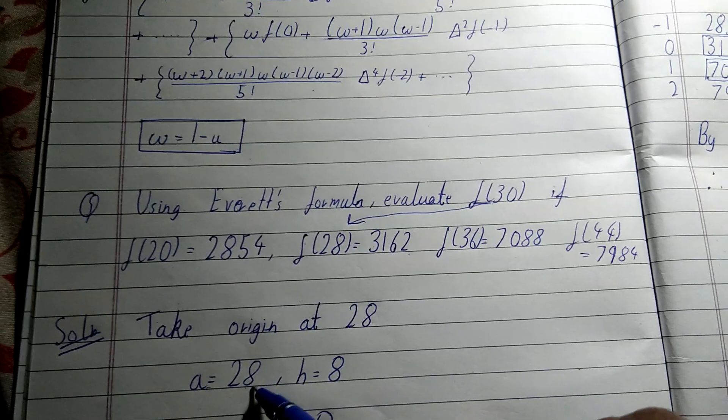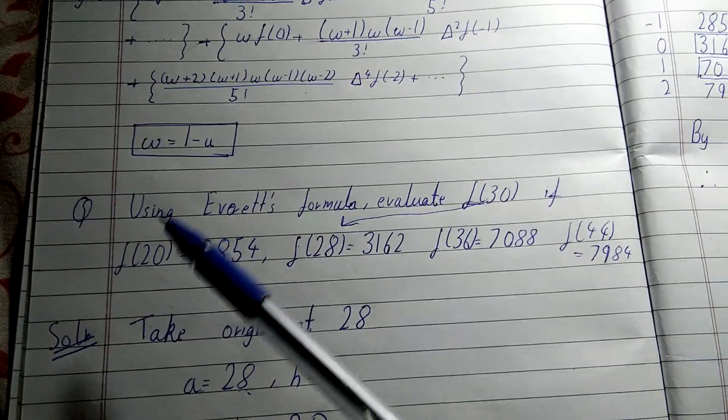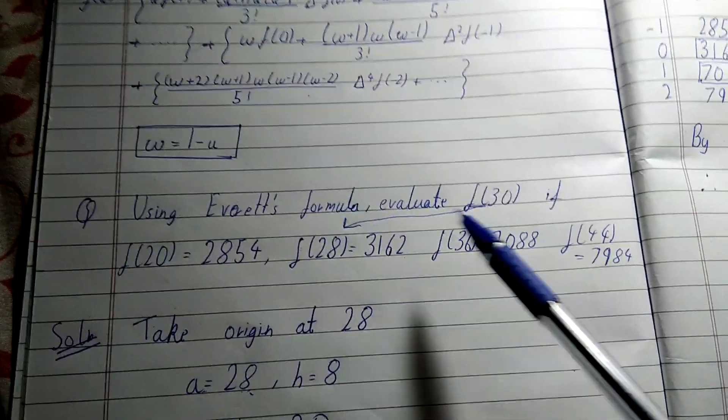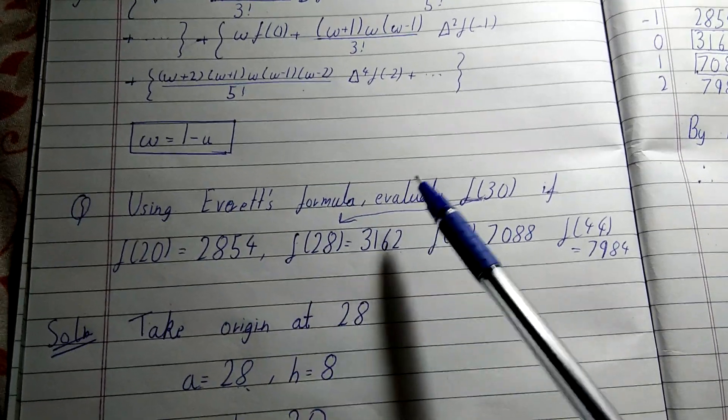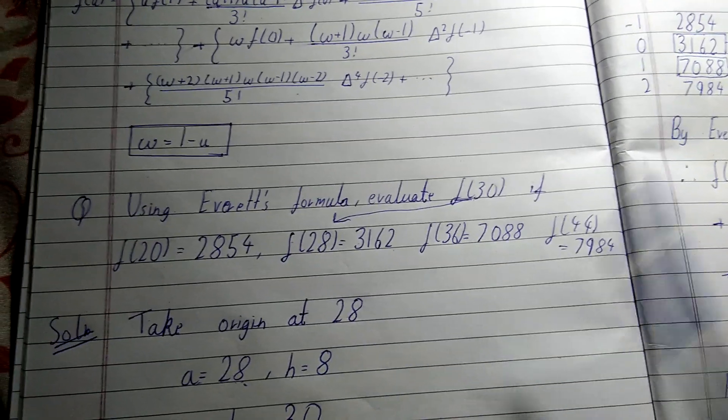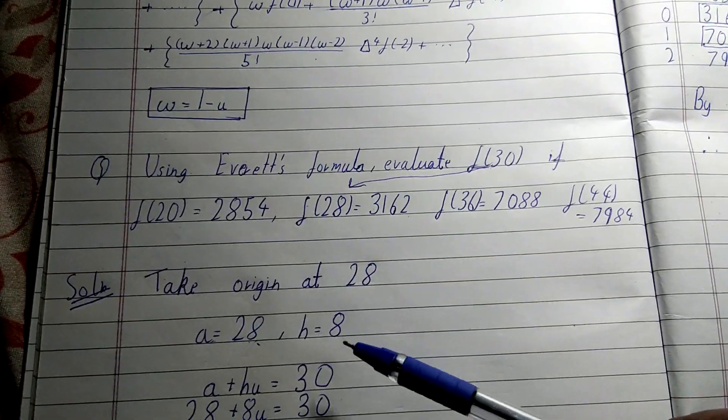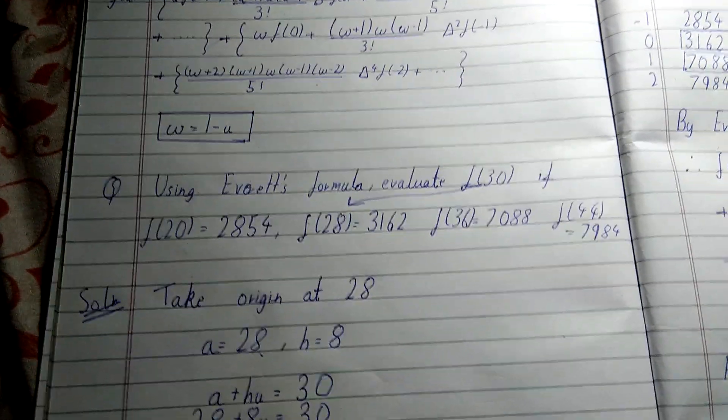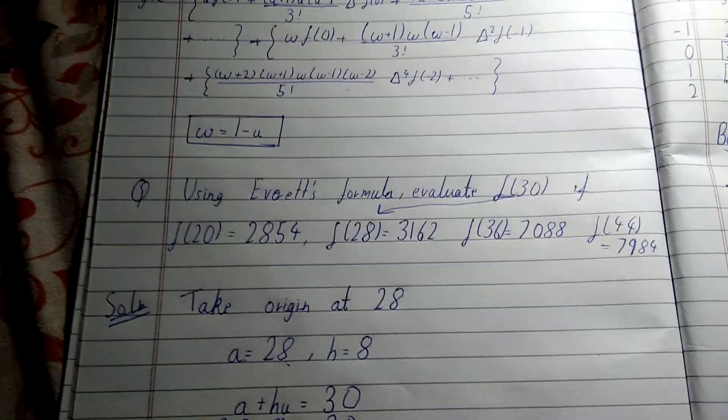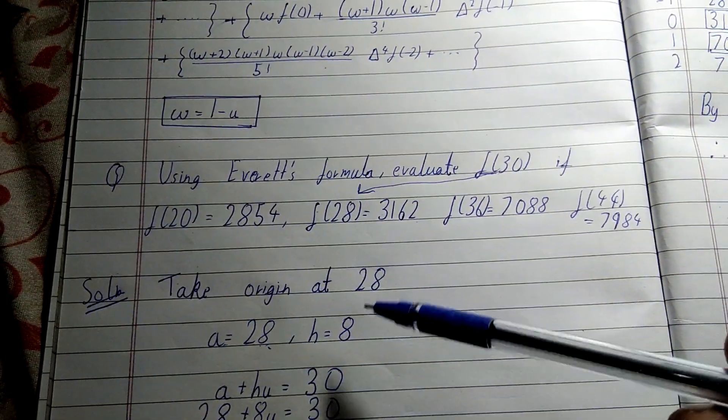Our initial point or origin is 28, and the change from 20 to 28 is 8, so h = 8. We have to put in the formula that we use to solve this in Gauss, Newton's, Sterling's, and Bessel's—it is the same as that.